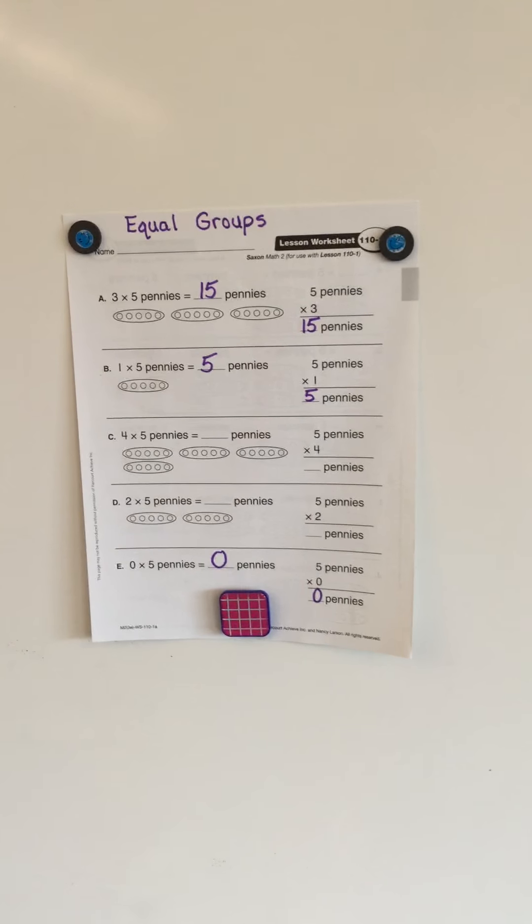Look way down at the bottom. No groups, zero groups of five pennies is zero pennies. Anytime you multiply something times zero, the answer is always zero. Even if it's a thousand times zero, it's always zero. Five pennies times zero groups is zero pennies.